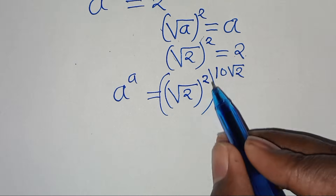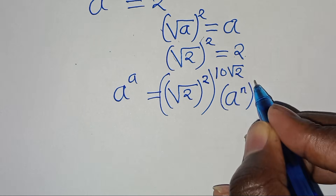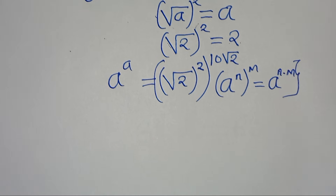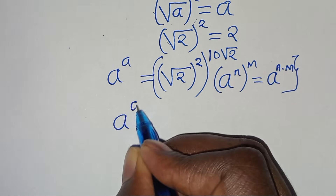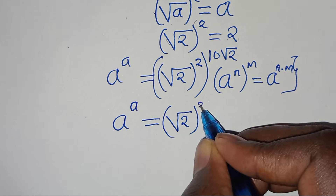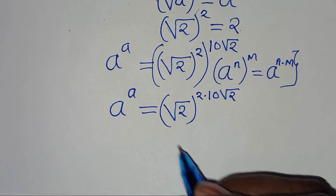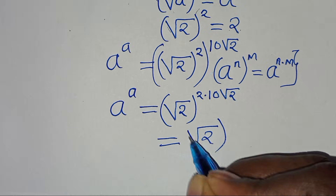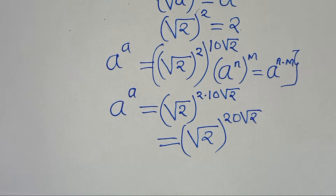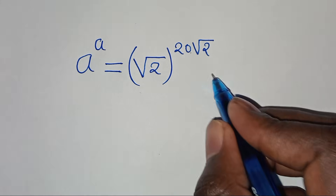The next step is that square root of 2 to the power of 2, raised to the power of 10 times square root of 2, is in the form of a to the power of n raised to the power of m, which we can express as a to the power of n multiplied by m. Applying this property, we have a to the power of a equal to square root of 2 raised to the power of 2 multiplied by 10 square root of 2. This implies square root of 2 raised to the power of 20 square root of 2.